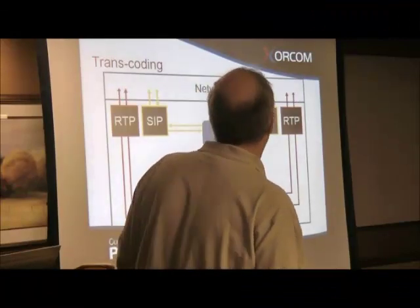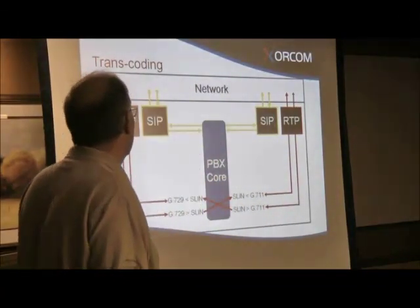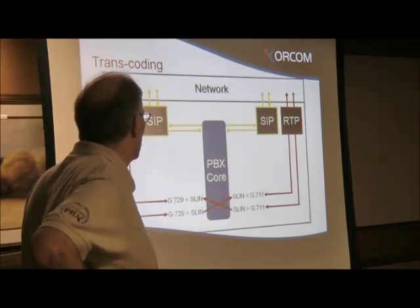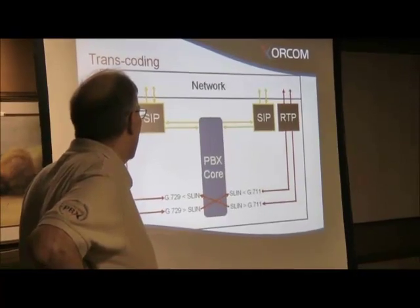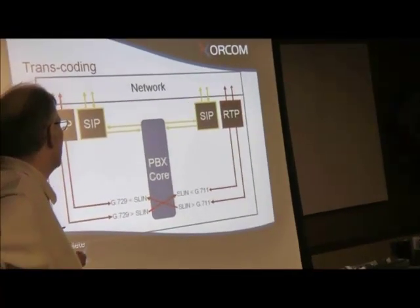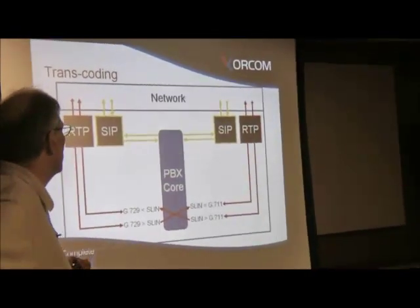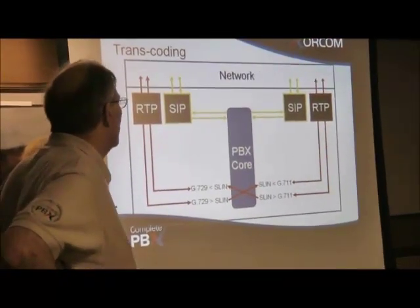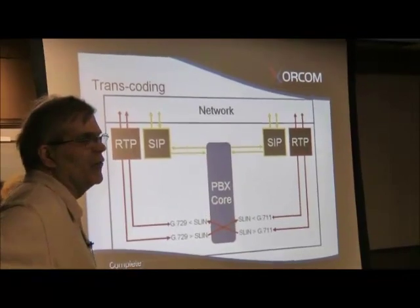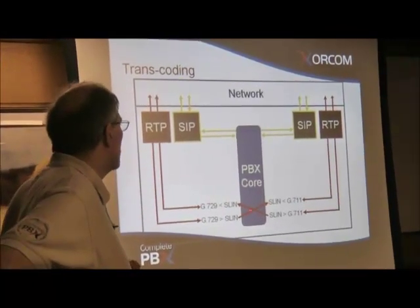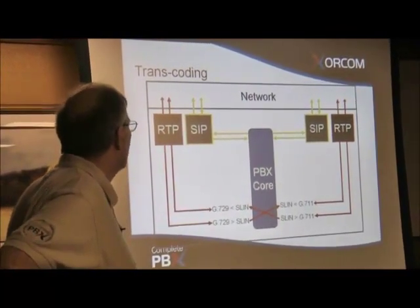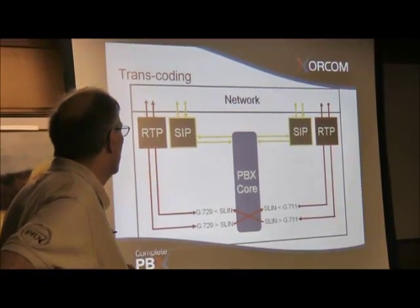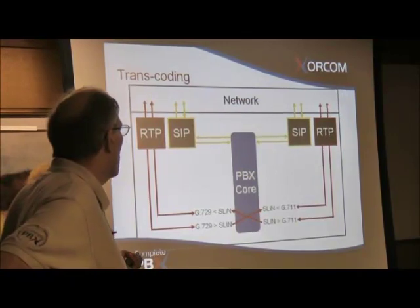I think everybody understands the task — let me give you a quick look at it. You've got your RTP stream coming in. The core of your PBX is taking a G729 and converting it to something used inside the system or by all the phones inside the system. This could easily be an audio stream being saved to disk. You could easily have one phone call where this G729 has to service a phone plus service audio recording simultaneously.